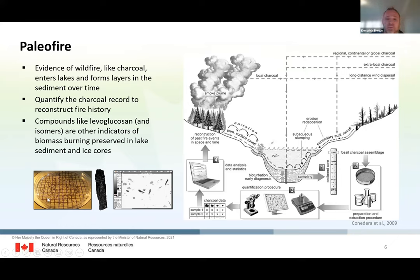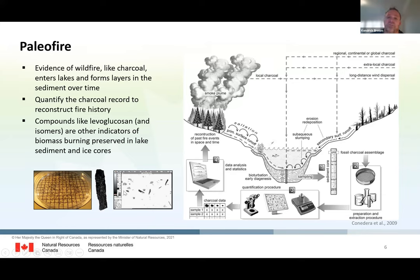We can come along, collect a core, process it for its charcoal signal, and reconstruct the incidence of fire. Here's a petri dish with one sample — we systematically work through it looking under a microscope counting all the charcoal fragments. Charcoal is black, opaque, has cellular structure, is metallic looking and brittle. We tabulate the length, characteristics, and number of charcoal fragments we're encountering. In addition to using charcoal, we can also extract molecular markers of biomass burning like levoglucosan and its isomers galactosan and mannosan — I'm working on compiling such records from the Yukon through British Columbia to reconstruct paleo smoke.